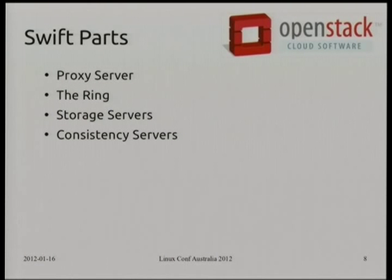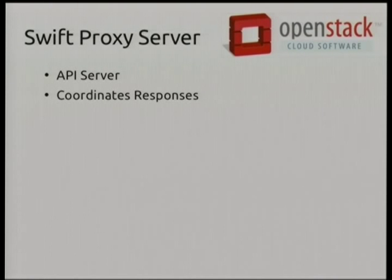There are essentially four parts to Swift, even though some have subparts. There's a proxy server, or servers; there's the ring; storage servers; and consistency servers. The last one we're not going to talk about as much. The proxy server — even though it's called the proxy server — is essentially the API server. It's the public face of Swift, the thing you're going to talk to. You send it REST calls, and it does stuff. It takes responses and sends those back to you. They call it the proxy server; I didn't get to pick — turns out I'm not a core developer on Swift.